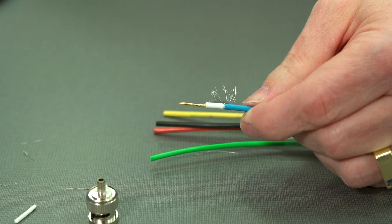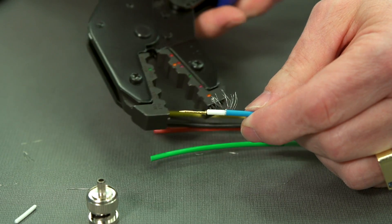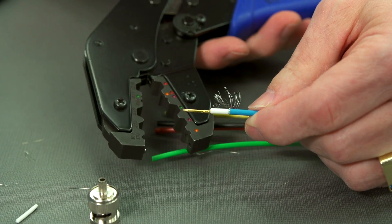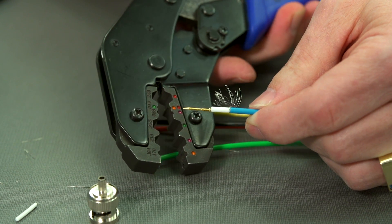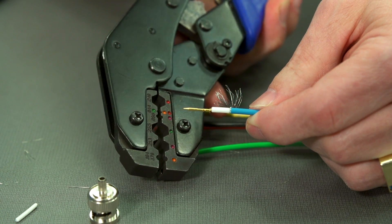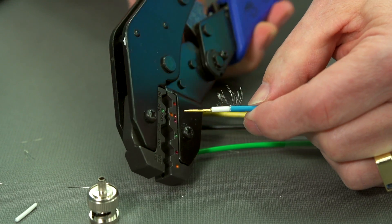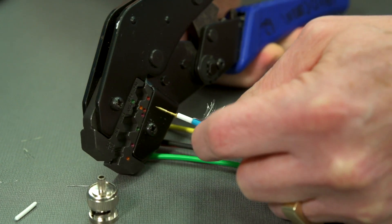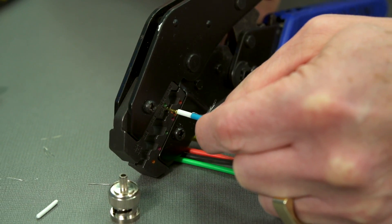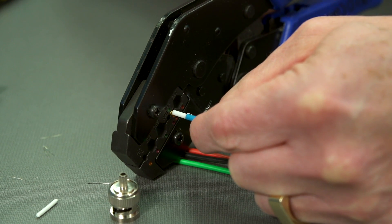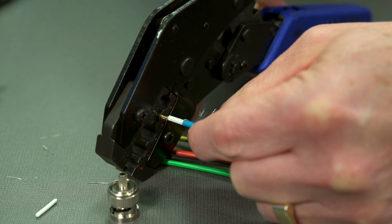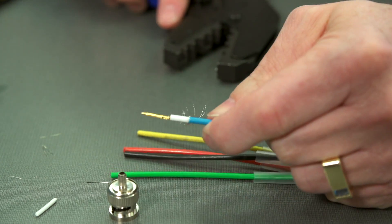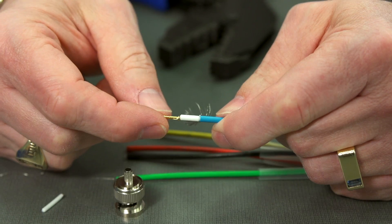And the crimp tool has a few different settings. We're going to be using the orange holes, and the center conductor is the one further in the back. And what I like to do is close this down just a little bit and then poke this into the hole and crimp. And now that connection is crimped nice and tight.